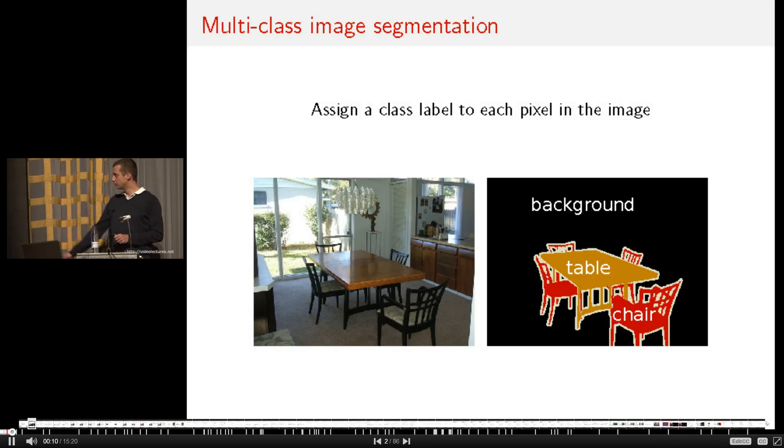This multi-class image segmentation is usually approached as a MAP inference problem in a conditional random field, where the unary term describes how likely a certain pixel is to take a specific label. Those likelihoods are normally found by first extracting features from an image and then training a classifier on those features. In our paper, we used TextonBoost proposed by Shotton et al., and this classifier classifies every pixel independently of one another, such that the final classification can be fairly noisy or inconsistent over the whole image.